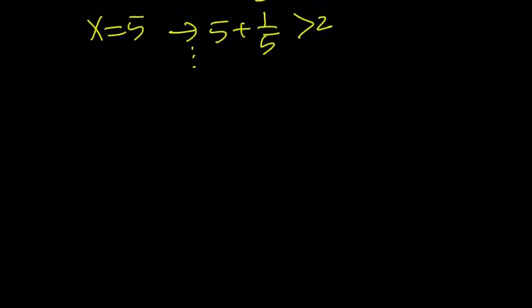So we're going to use AM-GM again. But this time, we're going to use it on x and 1 over x. And again, x is positive in this case. And if we have a positive x,